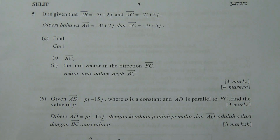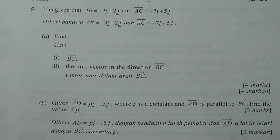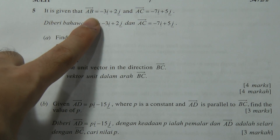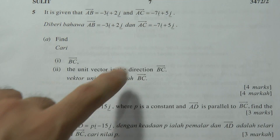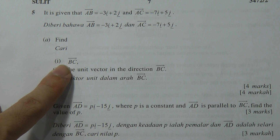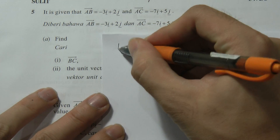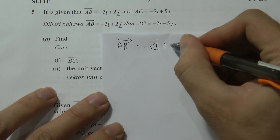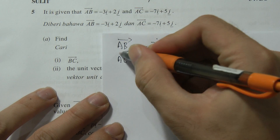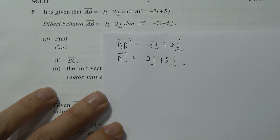Now we go to Question five, which is about vectors — a very easy question that most students can do well. It's given that AB equals negative 3i plus 2j, and AC equals negative 7i plus 5j. We need to find BC.